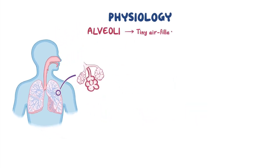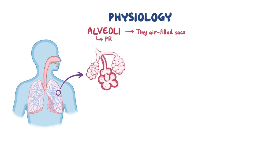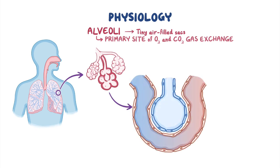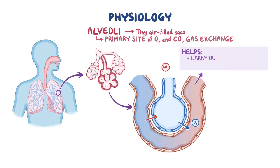These tiny, air-filled sacs are the body's primary sites of oxygen and carbon dioxide gas exchange. The gases move across the alveolar capillary membrane, with oxygen moving from the alveolar sacs into the blood and carbon dioxide moving from the blood into the alveolar sacs to be exhaled. This allows for a consistent oxygen supply to carry out bodily functions and to maintain the proper blood pH level.